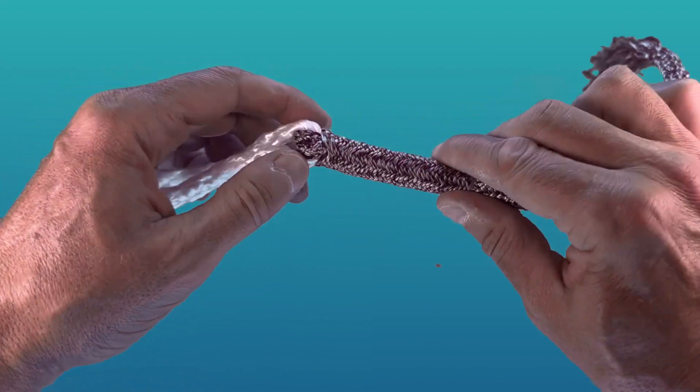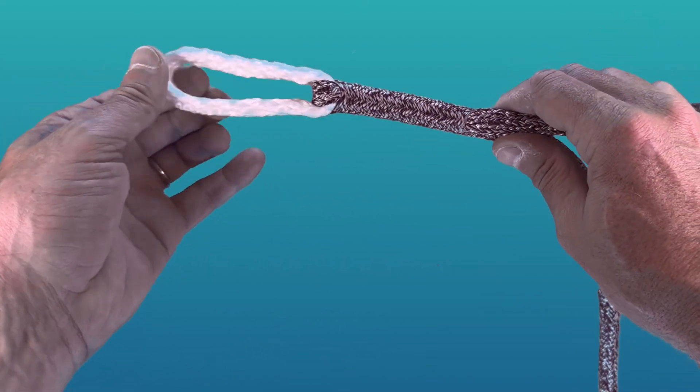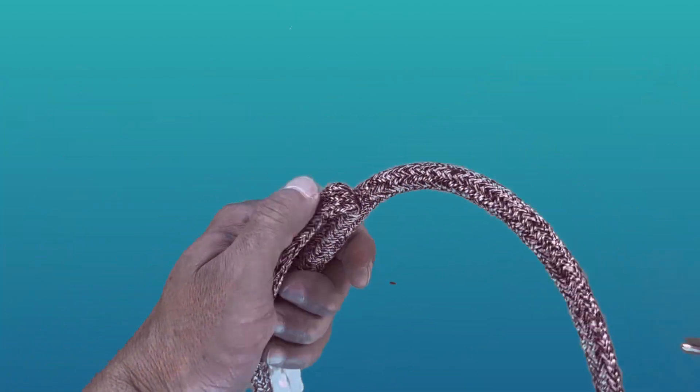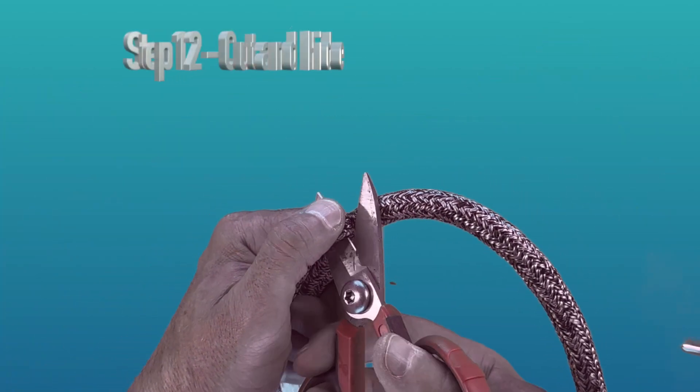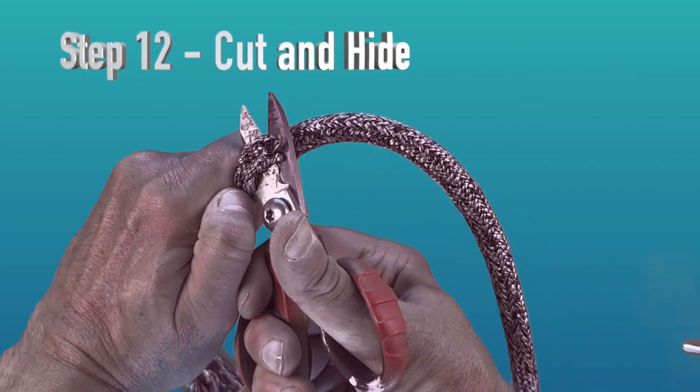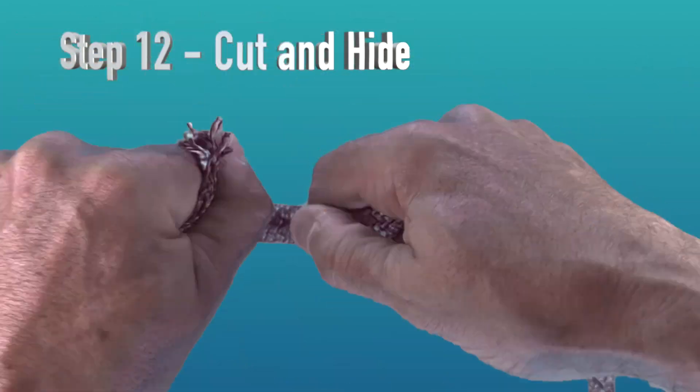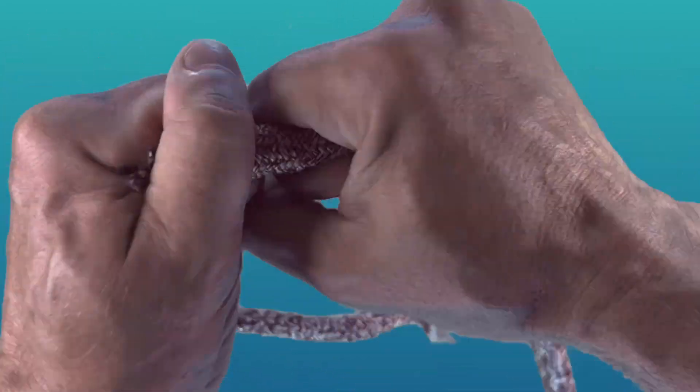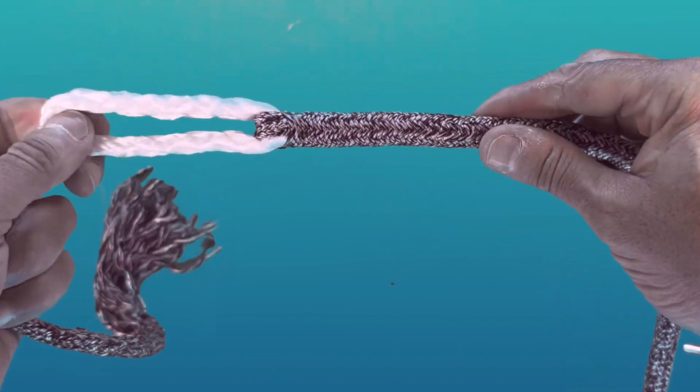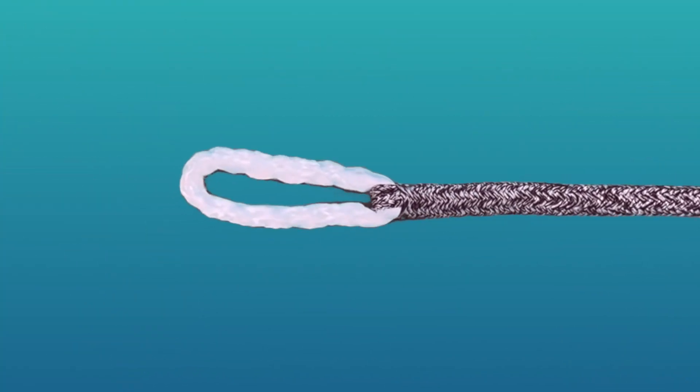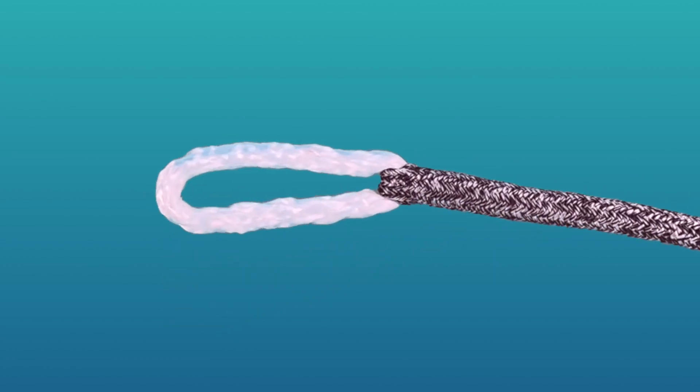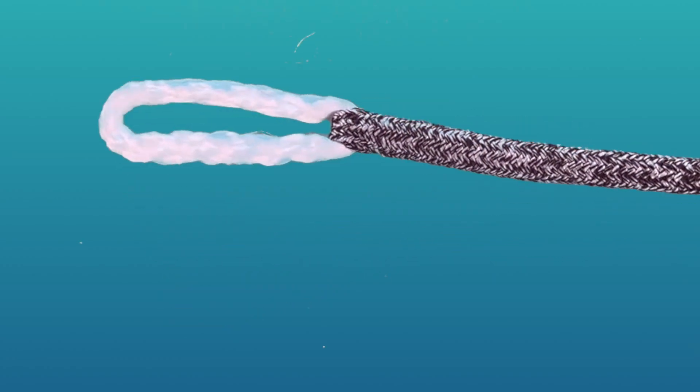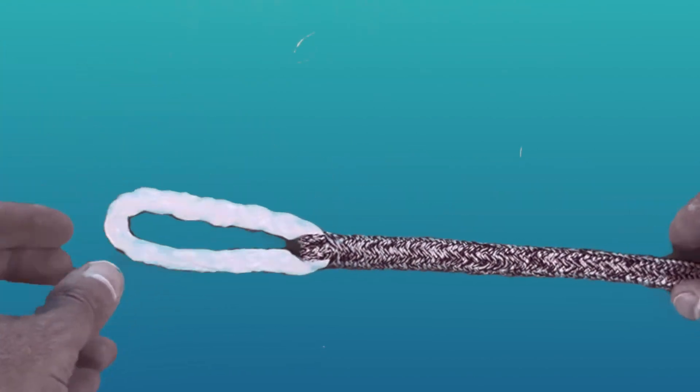For step number 12, you want to bend the inner core on itself and cut it off as close to the exit point without nipping any of the threads of the outer core. You then just want to work it again on itself to complete that bury. And there you have it, the completed eye splice in Dyneema double cord rope.